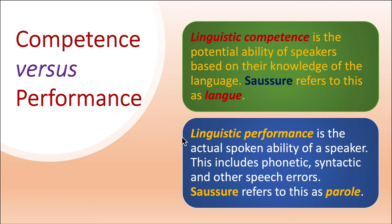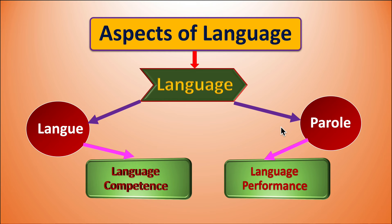Linguistic competence is the potential ability of speakers based on their knowledge of the language. SOSA refers to this as LANG. Linguistic performance is the actual spoken ability of a speaker — this includes phonetic, syntactic, and other speech errors. SOSA refers to this as PAROL. Aspects of language has the main division, that is to say language, which is further divided into LANG and PAROL, where LANG is further referred to as language competence and PAROL as language performance.